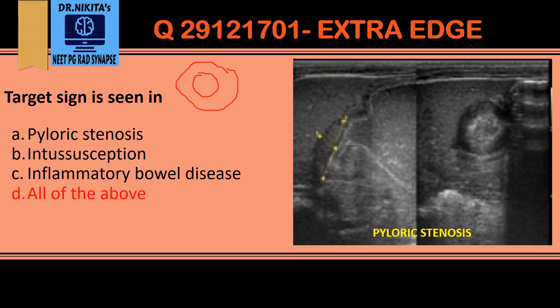In pyloric stenosis, on this ultrasound image, we can see the stomach, the liver, and the pylorus. The pylorus is elongated and thickened. If we take a transverse section, we see the inner circle, which is the lumen of the pylorus, and the outer circle, which is the thickened muscle layer. That is why we get a target sign in pyloric stenosis.